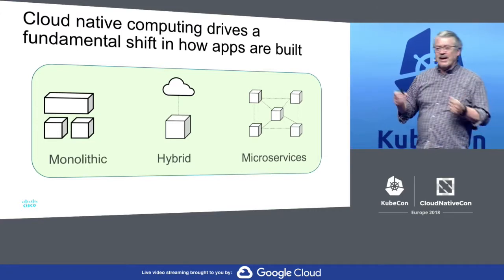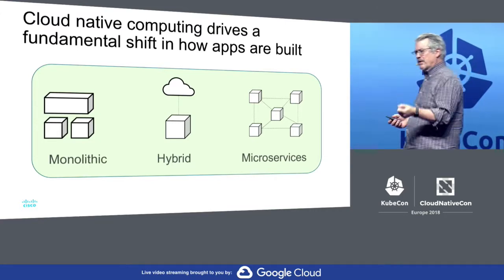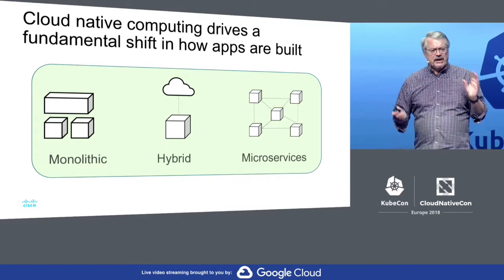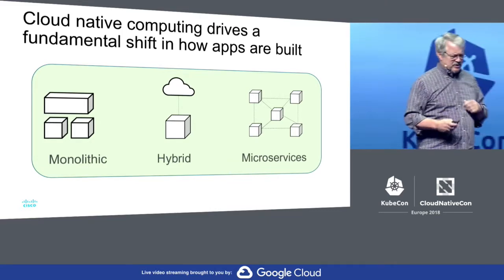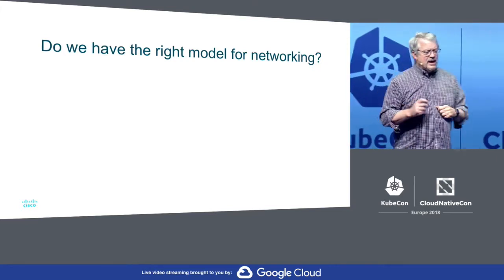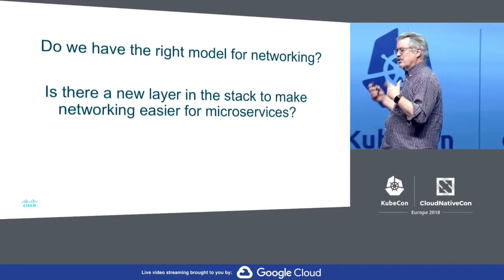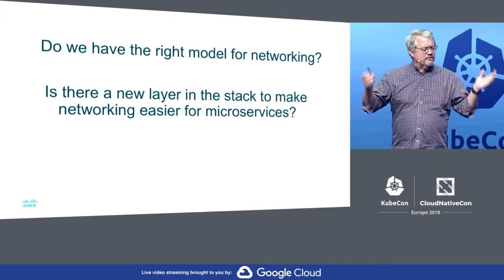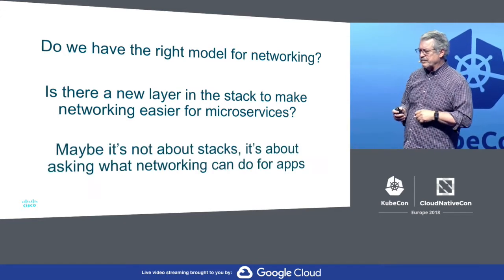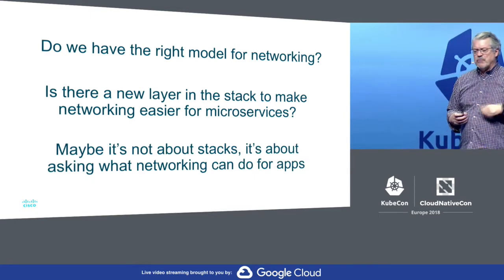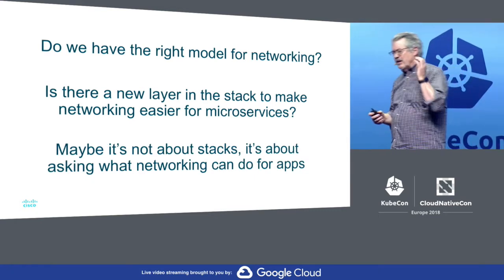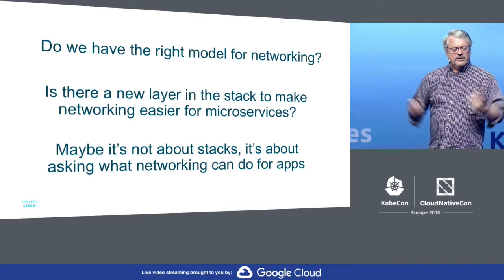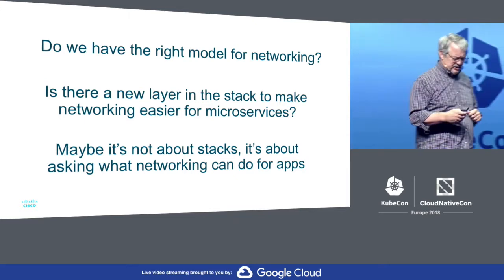Distributed computing is not easy. Whereas we want an application team to focus on a very simple service, all of a sudden we've introduced complexity because these services have to communicate. So do we have the right model for networking? Do we need a new layer in the stack to make networking easier for the development of microservices? Maybe it's not about stacks at all. Maybe what we really should be thinking about is a networking service that we need to allow this to take place in terms of building microservices.